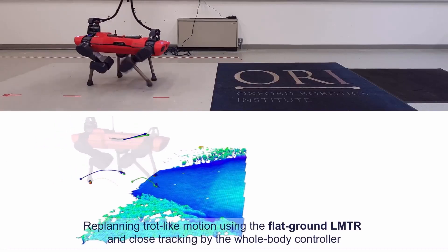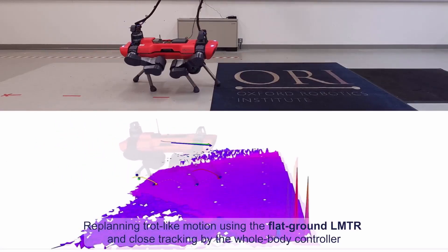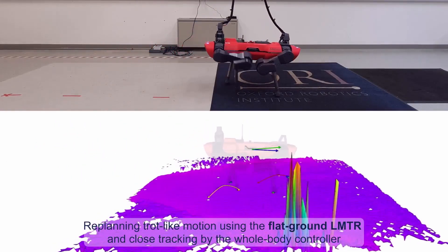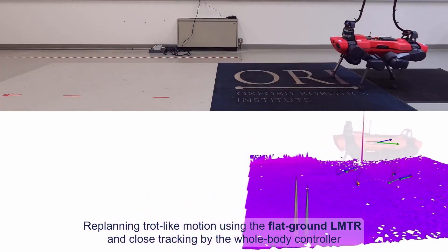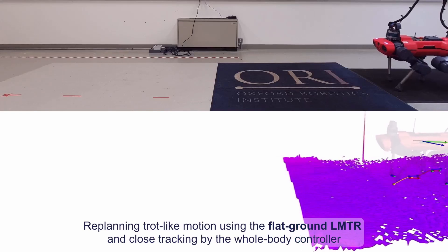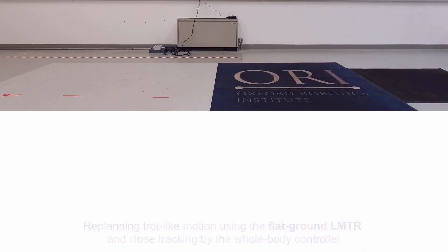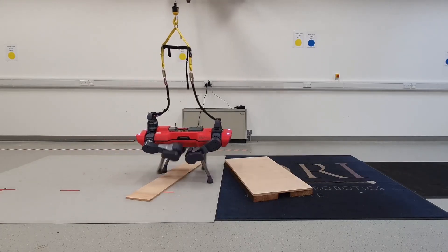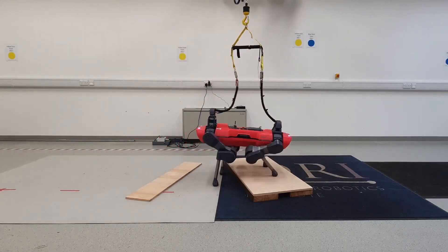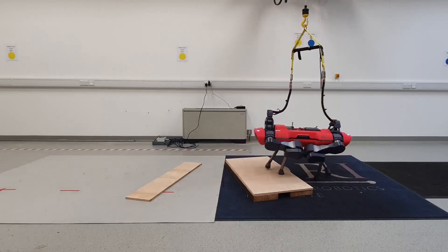We started with locomotion on flat ground. By generating expert data with varying initial conditions, we successfully executed a dynamic trot-like motion initialized by the LMTR with minimal tracking error. As each trajectory segment is refined online by the optimizer, we are able to adapt the initial gait from the flat ground LMTR and traverse mild terrain.